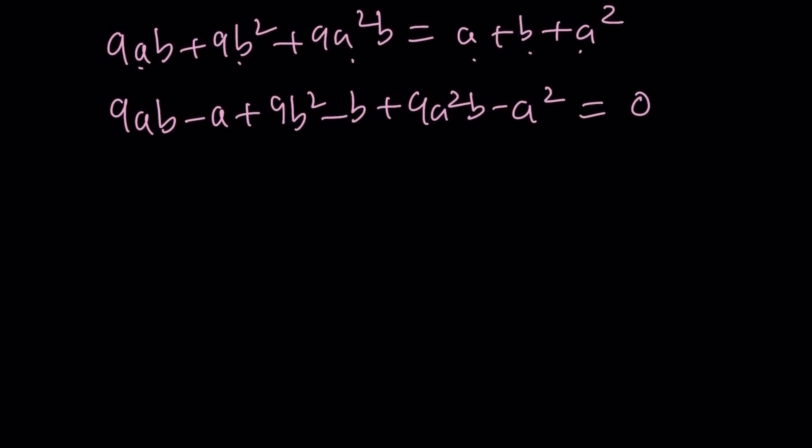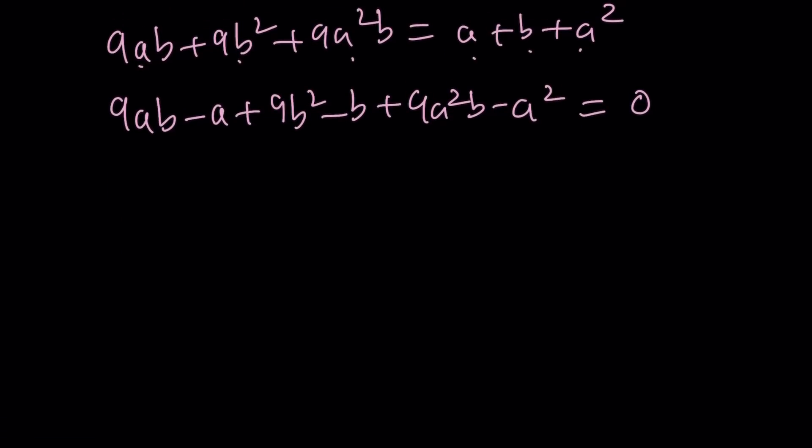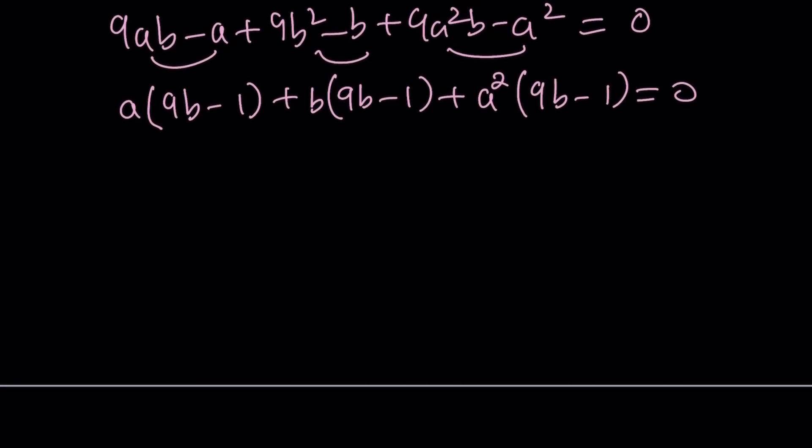So I'm going to subtract like this 9ab minus a plus 9b squared minus b plus 9a squared b minus a squared. So kind of like pairing these up with each one of these and when I do that actually this is going to be factorable. There's probably another way to factor it too but I'm just doing pairs. So the first pair gives me a as a common factor so that is 9b minus 1 and then we can take out a b 9b minus 1, 9b minus 1 plus a squared times 9b minus 1.